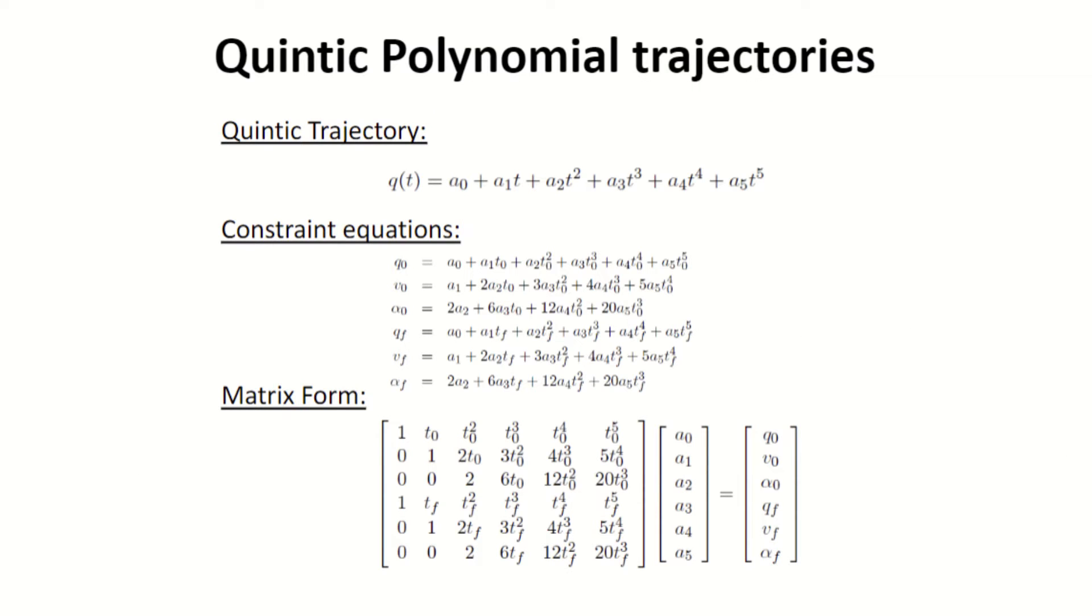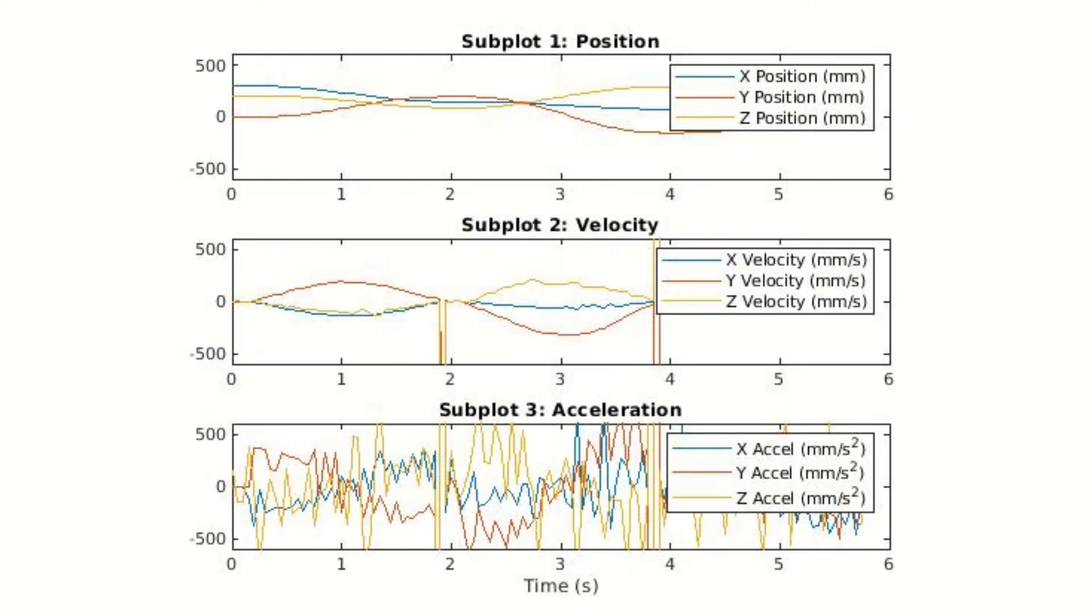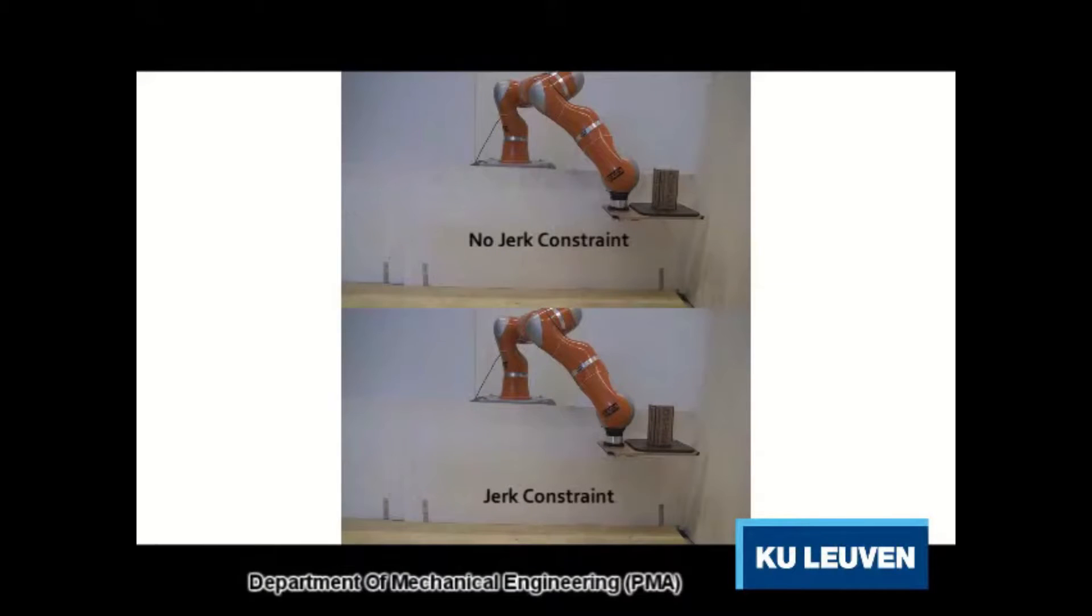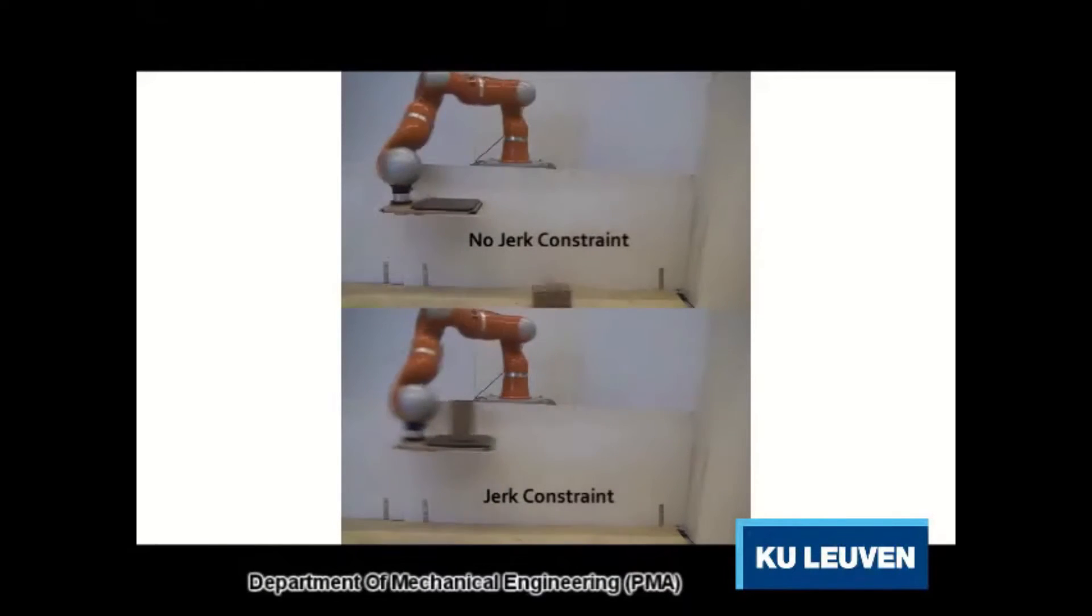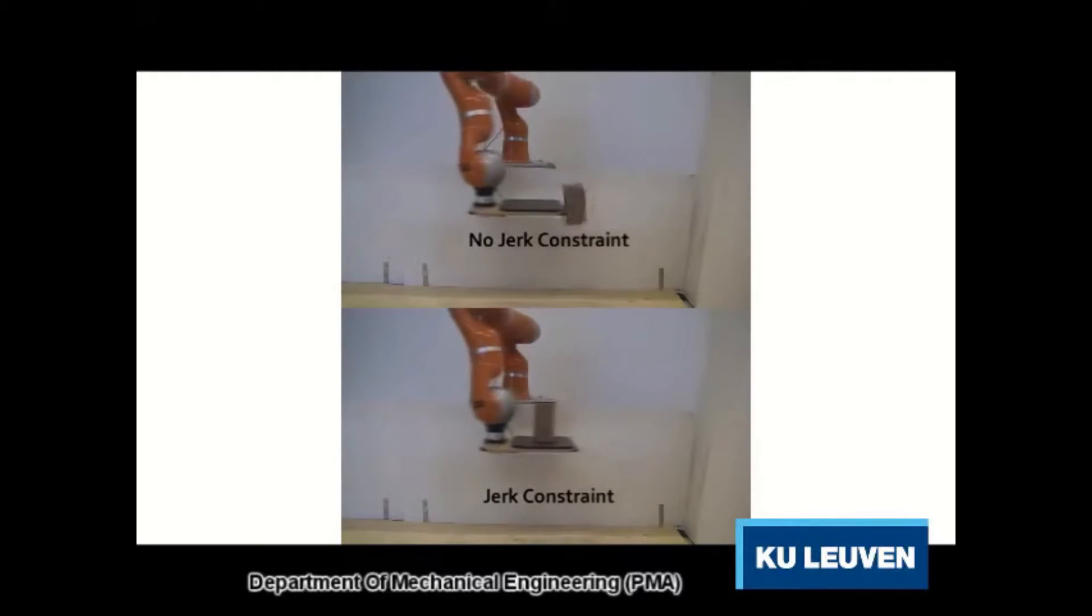Our robot uses quintic polynomials to generate a trajectory that can control the start position, end position, start velocity, end velocity, start acceleration, and end acceleration. Using a quintic trajectory gives us control over the start and end conditions, which allows us to ensure the arm moves along smooth paths without any rapid acceleration.